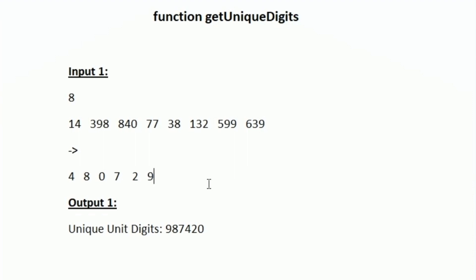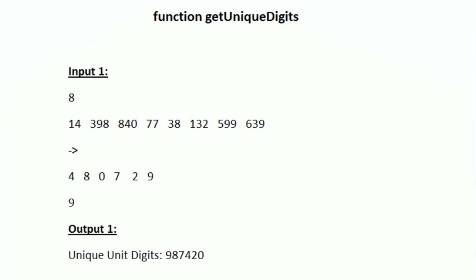Now we have to sort these unique unit digits in descending order. After sorting, the largest digit is 9, then the next largest is 8, then 7. We don't have 6 or 5. The next is 4, then 2, then 0. So the result after sorting the unique digits in descending order is 987420, which matches our expected output.